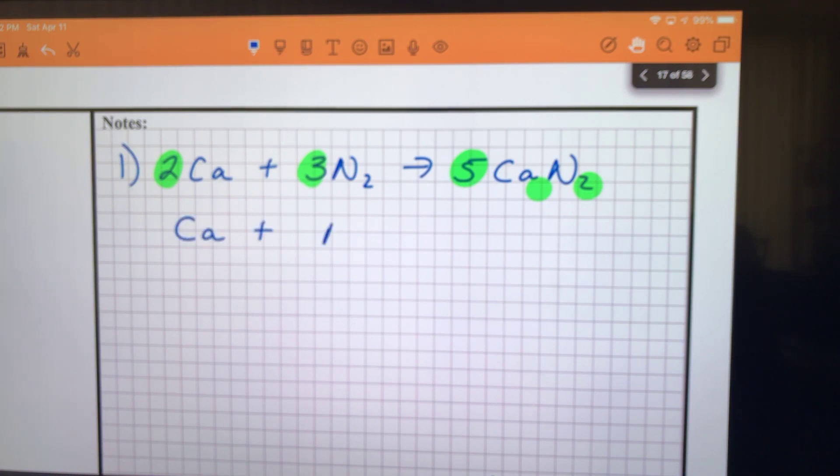So let's start over. We start with calcium reacting with nitrogen. Remember, just write the element symbols, then we're going to put those together. Remember the one furthest to the left in the periodic table comes first. The metal comes first, so Ca and N.